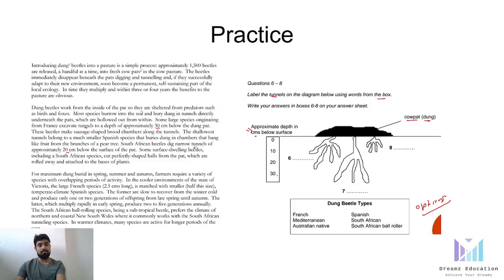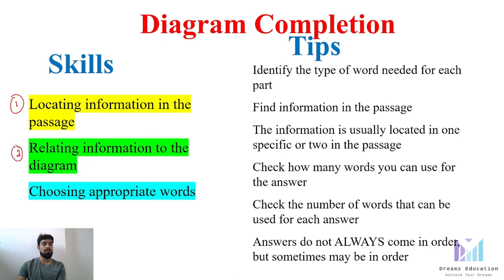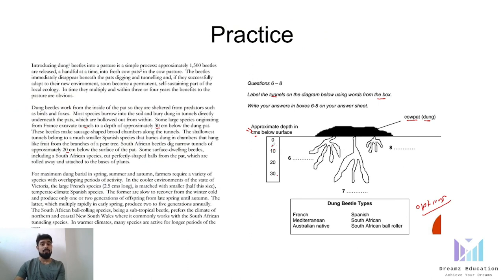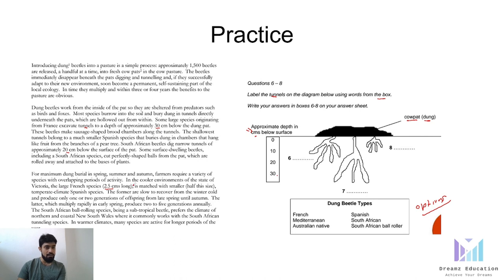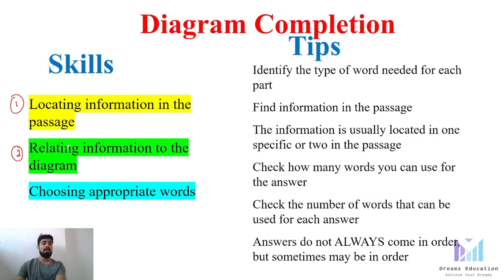The second important aspect is to relate your information to the diagram. For example, there is also some information related to centimeters in the third paragraph — something like 2.5 centimeters. So you have to cross-verify whether this information is related to the diagram or is something else. In the third paragraph they are talking about the size of a species, whereas in the second paragraph they are talking about the size of the tunnels. Since we are supposed to label the tunnels, that is how we relate our information to the diagram — we are supposed to read the second paragraph.